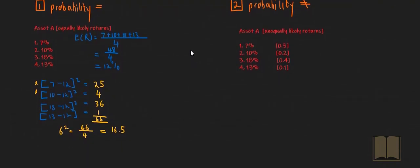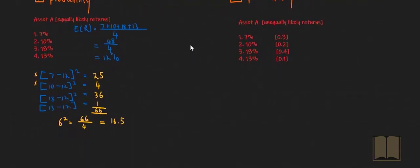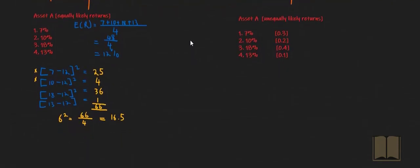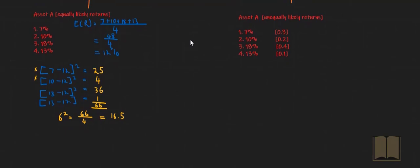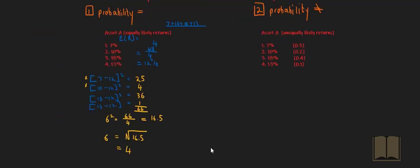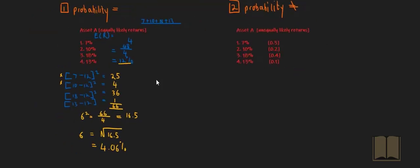However, we're not looking for the variance. We're looking for the standard deviation. So the standard deviation is simply just the square root of your variance of 16.5, and that gives you 4.06%.